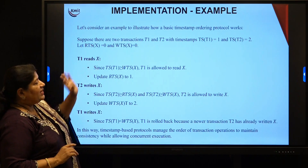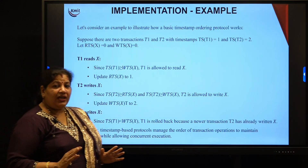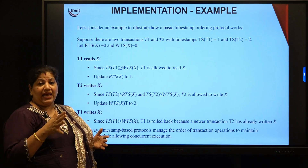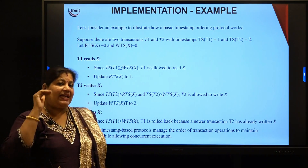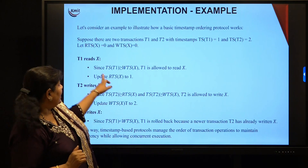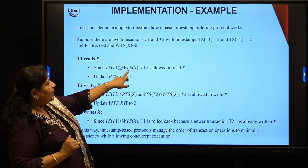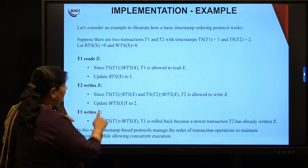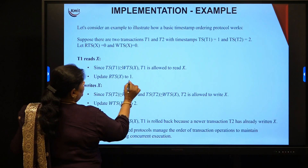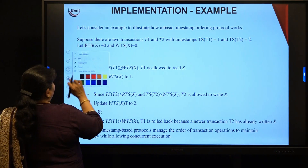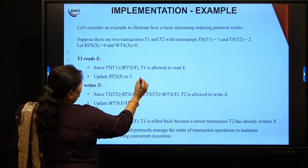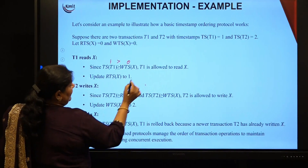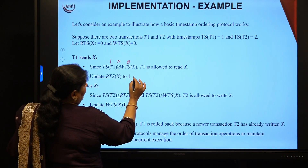First, T1 tries to read x. The condition is: when T1 wants to read x, the transaction timestamp of T1 must be greater than WTS(x). TS(T1) is 1 and WTS(x) is 0, so T1 is allowed to read. What will be the value of RTS? RTS(x) will be updated to max(TS(T1), RTS(x)) = max(1, 0) = 1. Since 1 is greater than 0, the read is allowed and RTS(x) becomes 1.